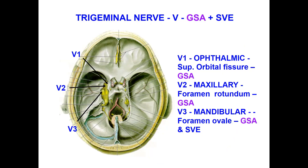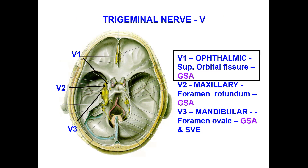It is the fifth cranial nerve. It has a general sensation and special visceral sensation. The ophthalmic division passes through the superior orbital fissure and has general sensation. The maxillary passes through foramen rotundum, also general sensation. The mandibular passes through foramen ovale and has general sensation and special visceral sensation.